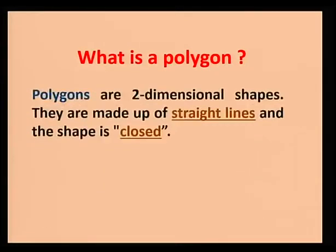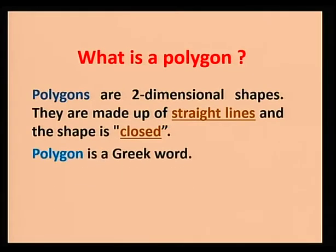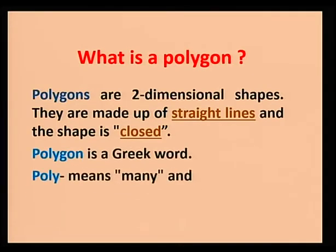Polygons are two-dimensional shapes. They are made up of straight lines and the shape is closed. What is most important is that to have a polygon, we need to have straight lines and the figure must be closed. In fact, polygon is a Greek word — poly means many and gon means angle.